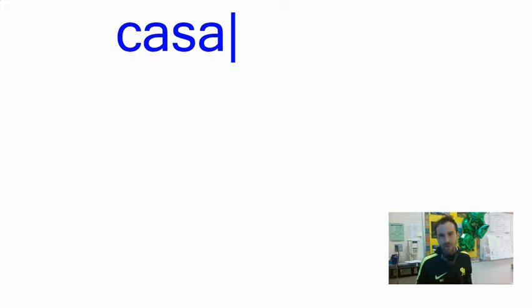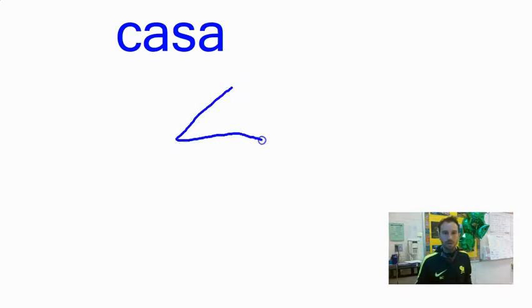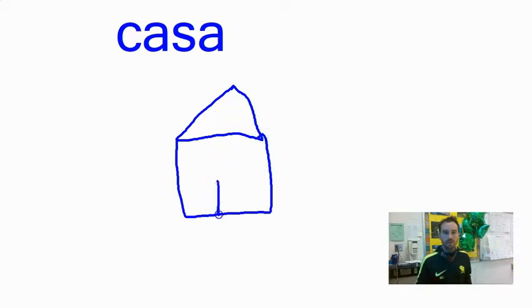When I'm done typing, I can press the left mouse button and it returns me to drawing mode, and then I can draw a house. You know what I mean? Then I'd say 'casa' — 'esta es una casa.'